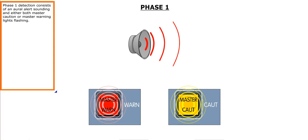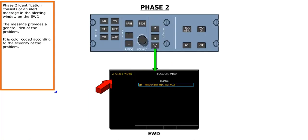Phase 1 Detection consists of an aural alert sounding and either both master caution or master warning lights flashing. Phase 2 Identification consists of an alert message in the alerting window on the EWD. The message provides a general idea of the problem. It is color-coded according to the severity of the problem.